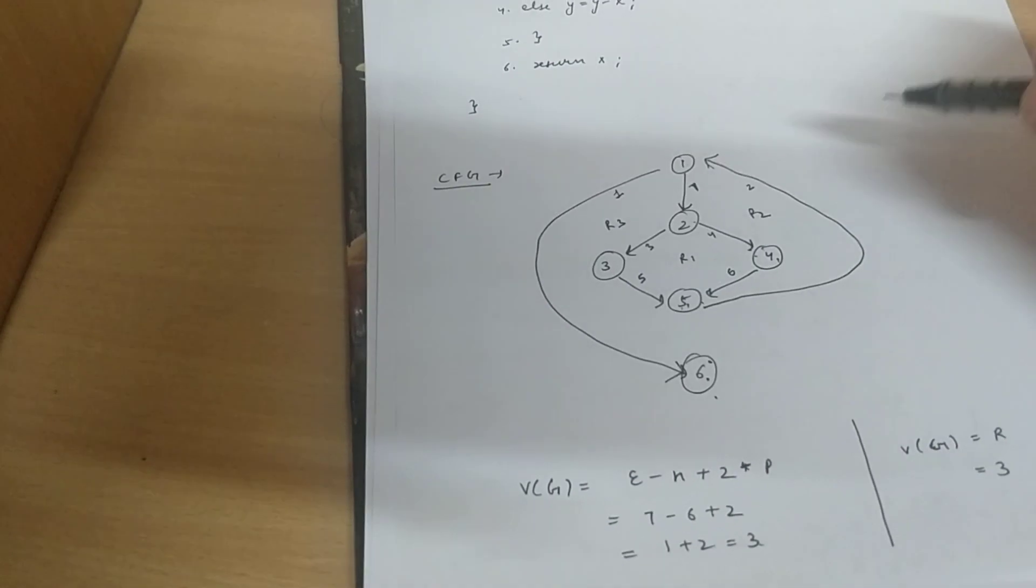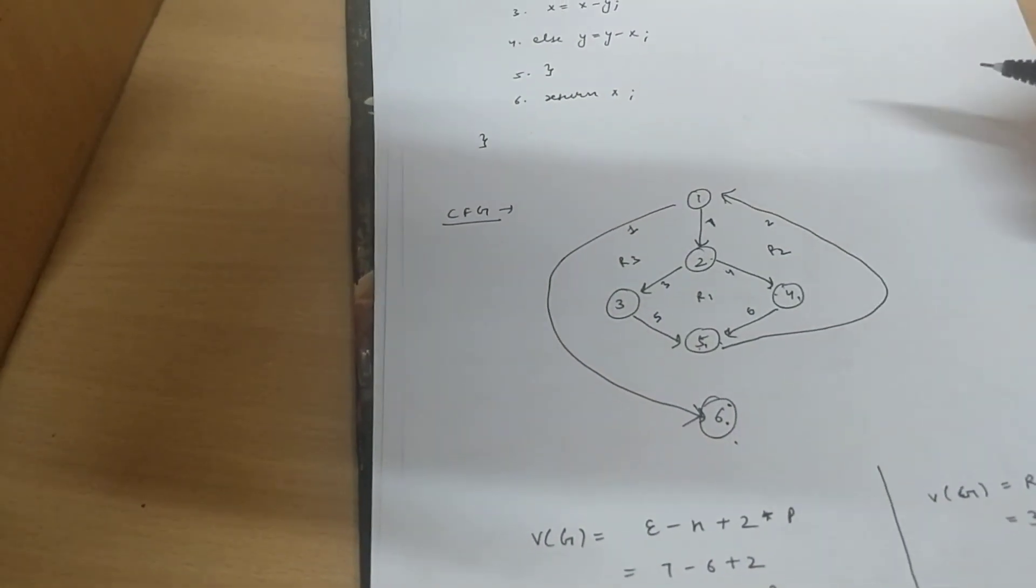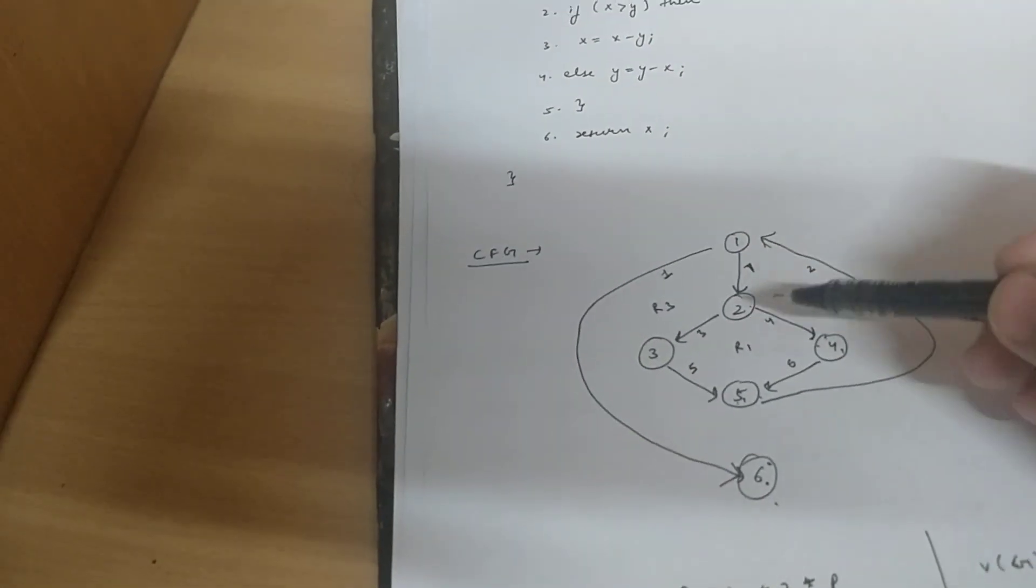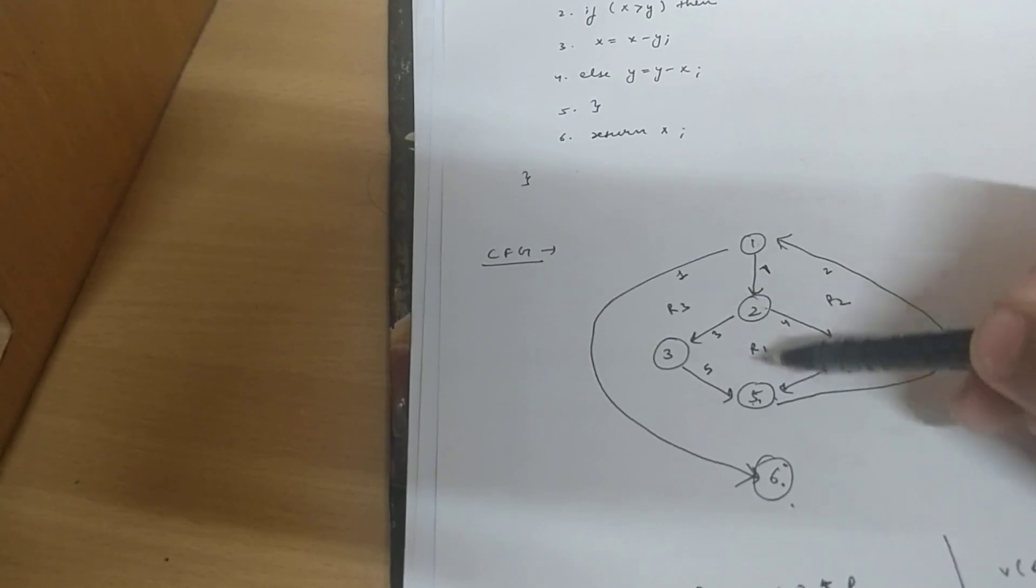So we have already talked about the second formula of determining the Cyclomatic complexity here, which is the number of regions. So we can calculate the regions as: This is the first region enclosed within 2, 3, 5 and 4. R1.